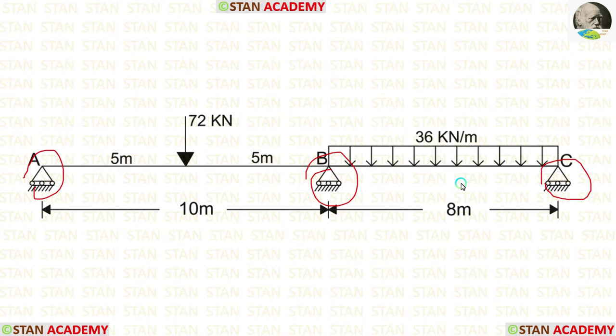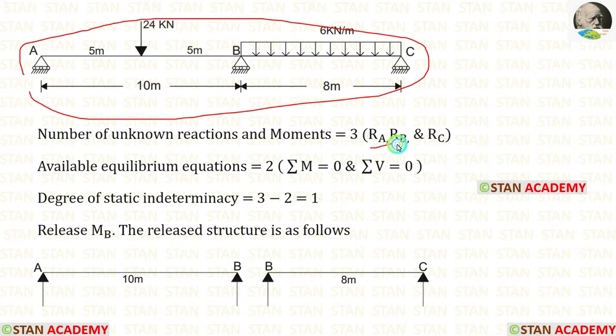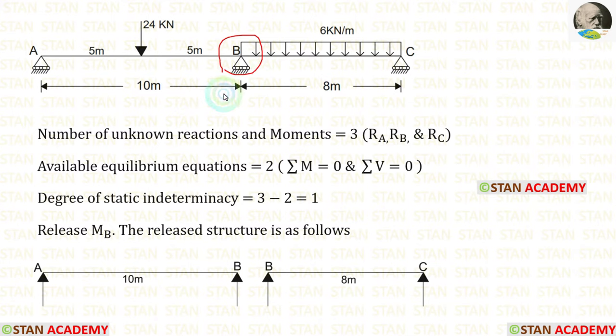In the flexibility matrix method, we have to find the degree of static indeterminacy of the structure. In this beam, we are having three unknown reactions: RA, RB, and RC. At points A and C there will be no moment, because they are simply supported ends. At point B, there will be a moment MB. MB will be acting like a pair — on one side in the clockwise direction and on the other side in the anticlockwise direction.